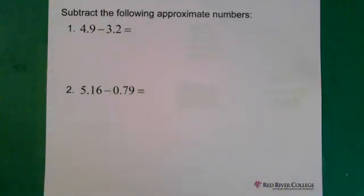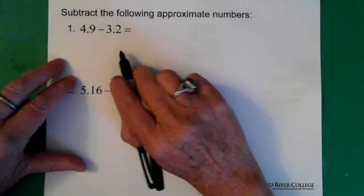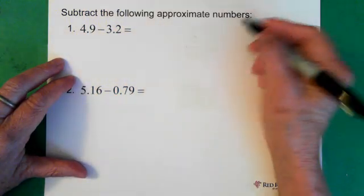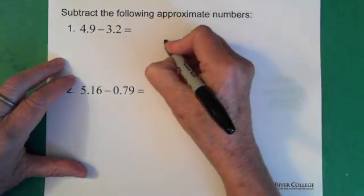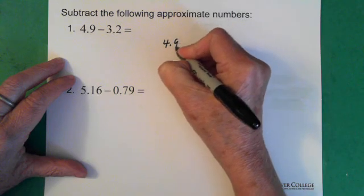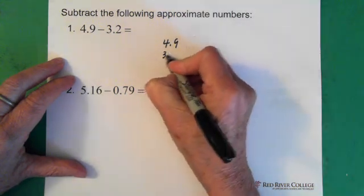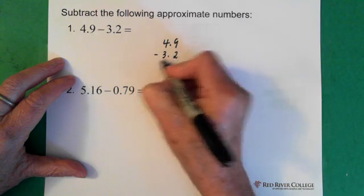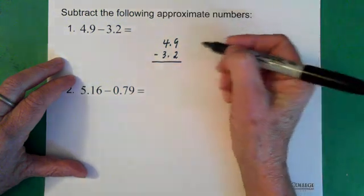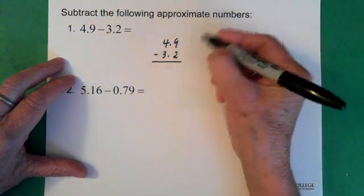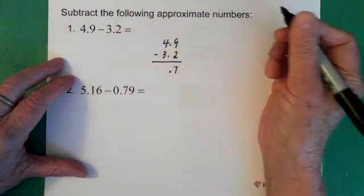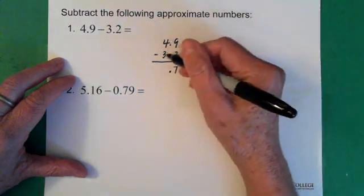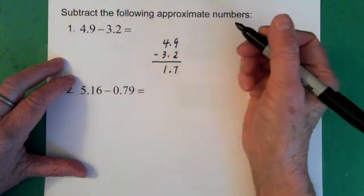Okay, so first question: 4.9 minus 3.2. So what you do here is you just line up your decimals. So 4.9, 3.2, and we're going to subtract this. And so we just take the 9 minus the 2 and we end up with a 7. Our decimal is here. 4 minus the 3 and we have a 1.